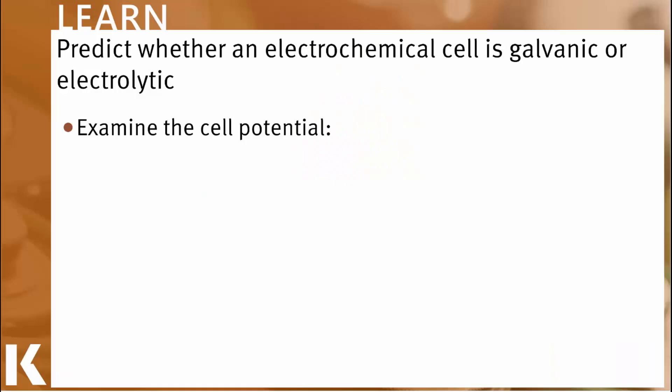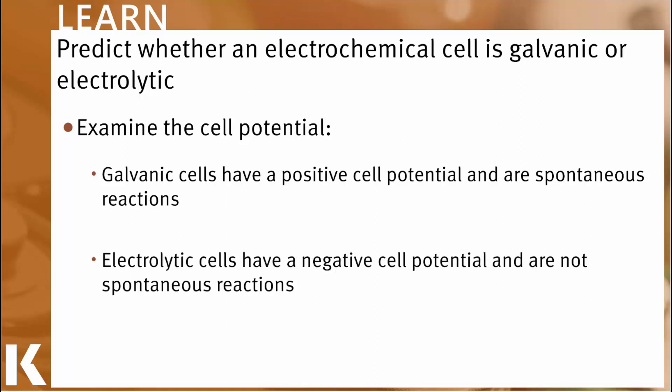The first thing that we can do is to look at the cell potential. You'll recall that galvanic cells have a positive cell potential, and that's because these are spontaneous reactions. In contrast, electrolytic cells have negative cell potentials, and that's because these are non-spontaneous reactions.